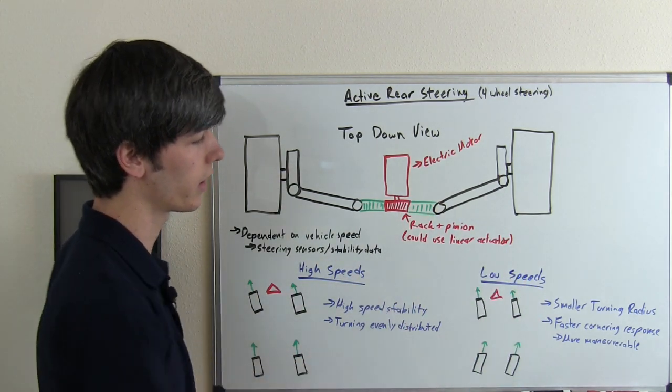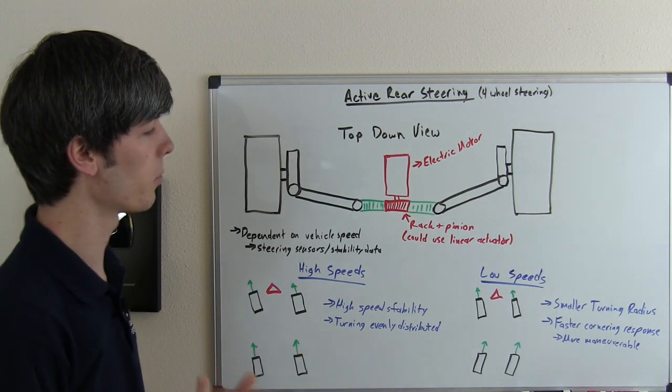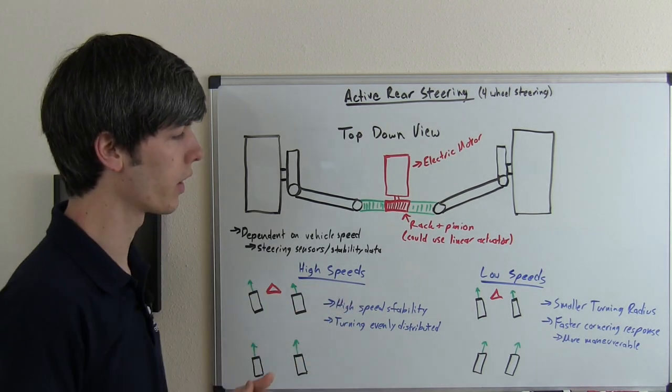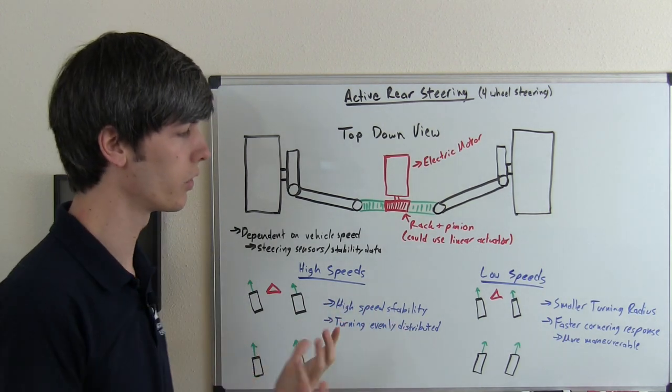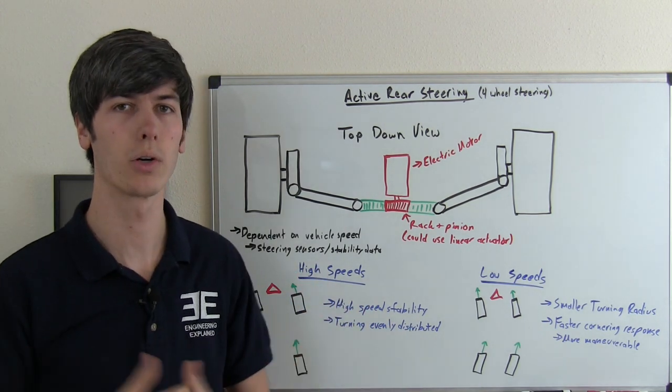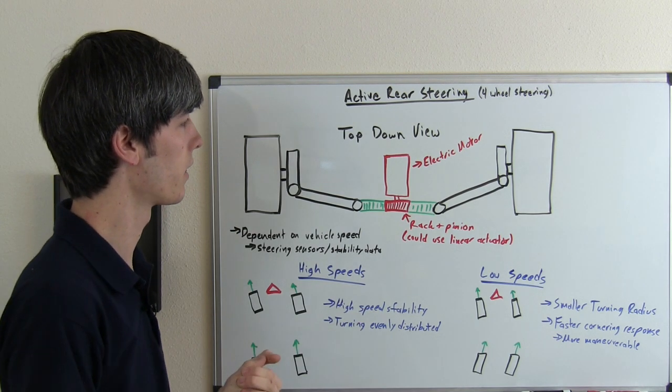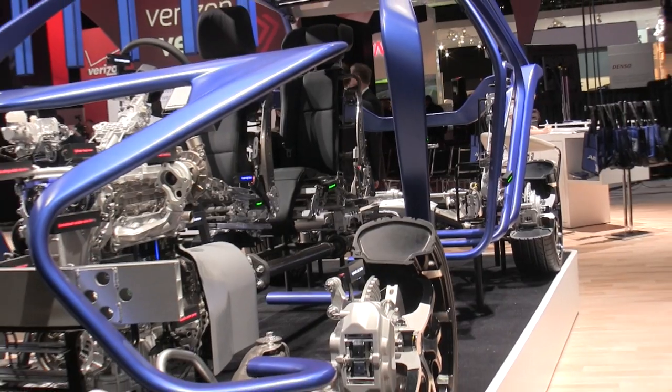What this does is it reduces your turning radius, so the vehicle is more maneuverable. Another thing at lower speeds when you do this - when it's still stable to do so - is you're going to have faster cornering response. So that's another benefit of having the wheels in that orientation.